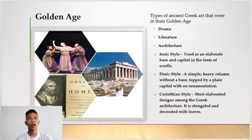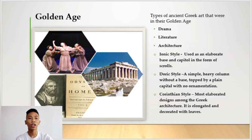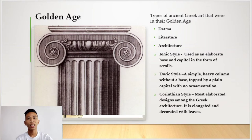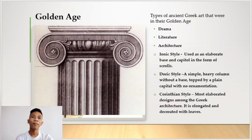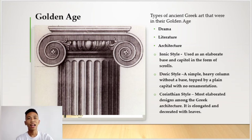The third ancient art created during the golden age is architecture. There are three types of architectural styles from this golden age. The first one is the Ionic style, which used an elaborate base and capital in the form of scrolls, as shown in the picture.